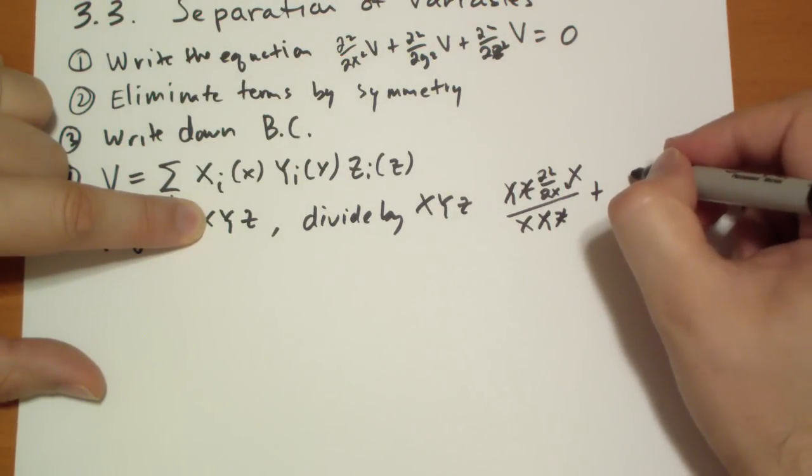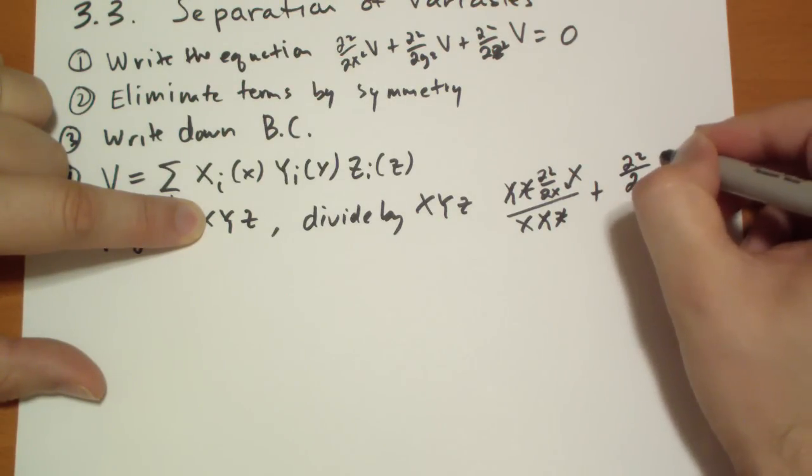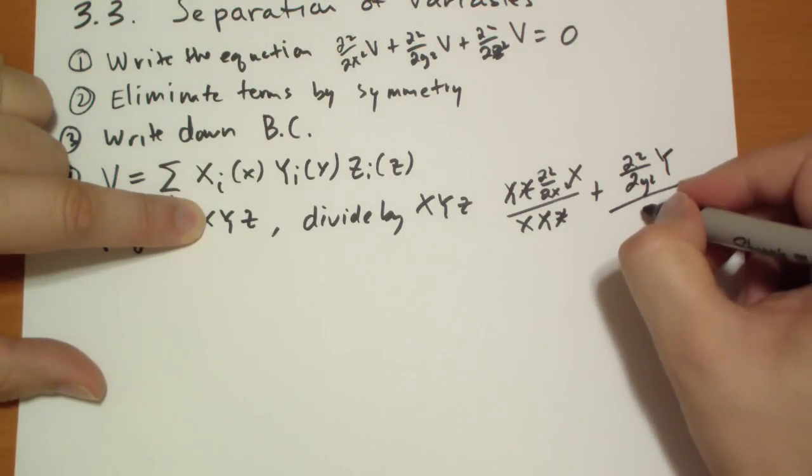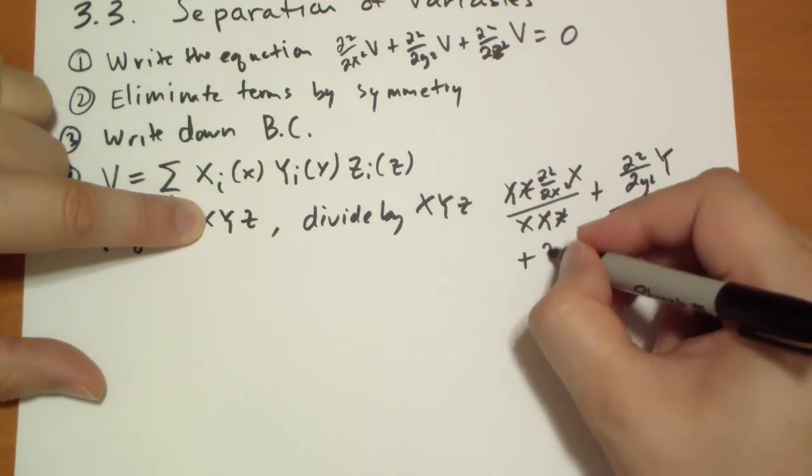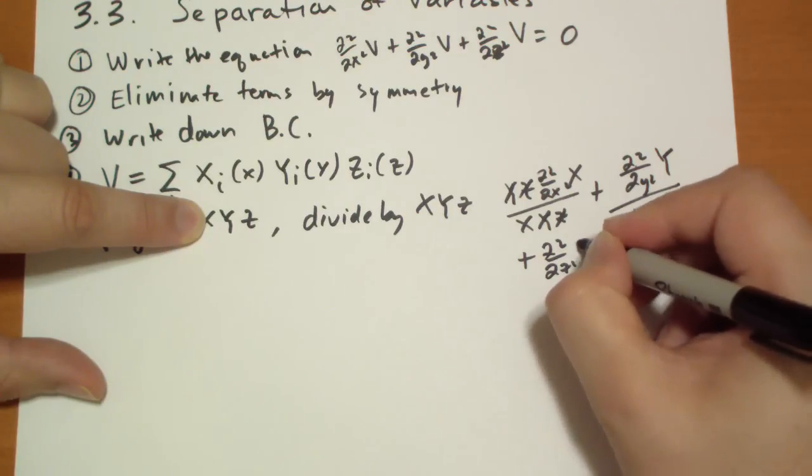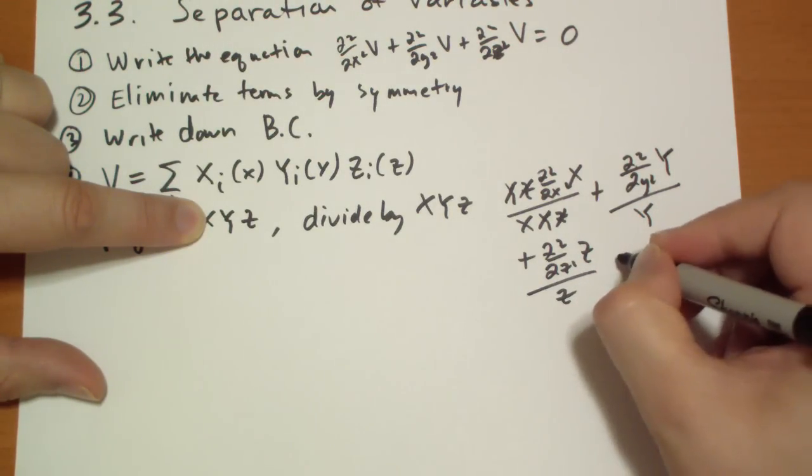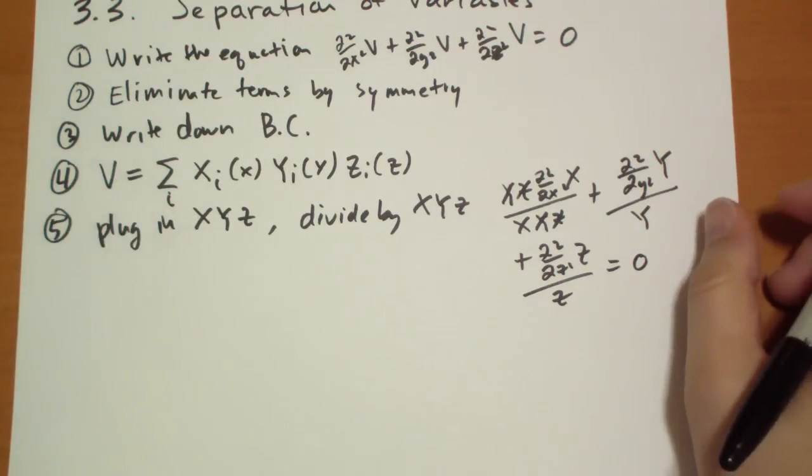And then by the same logic, you get d²Y/dy² divided by Y, and you get d²Z/dz² divided by Z. And that equals zero. At this point,